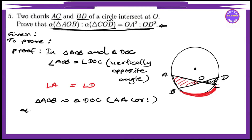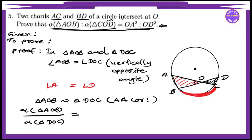Area of triangle A, O, B by area of triangle D, O, C equal to — OA squared by OD squared. So in this area, the area of triangle AOB squared over OD squared.